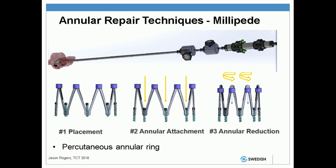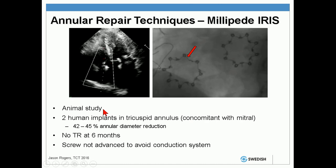The Mitralign device is probably the most interesting one for us as surgeons. It's a percutaneous ring essentially being placed, with eight screws first deployed into the annulus, followed by annular reduction. This is based primarily for the mitral valve but is being applied for the tricuspid valve as well. This has mostly been performed in animals, with two human implants reported to date as concomitant procedures with the mitral valve. The screw that is close to the conduction system is not deployed, so as to avoid conduction abnormalities. There has been a 42 to 45 percent annular reduction in diameter, and at least in this still shot there was no tricuspid insufficiency out to six months.